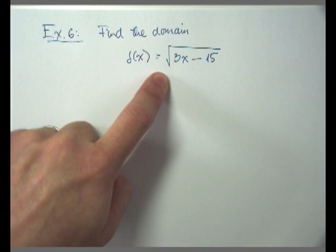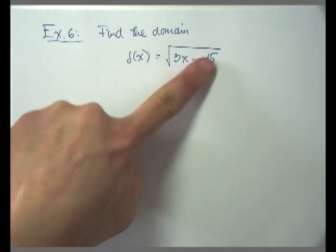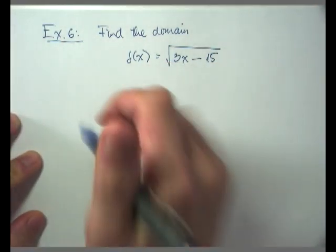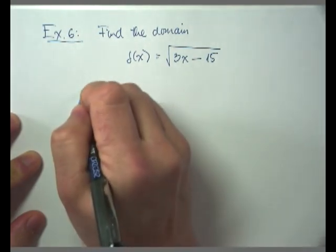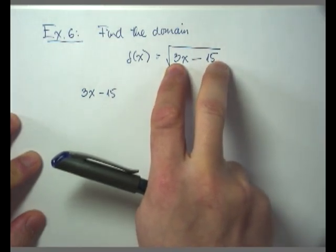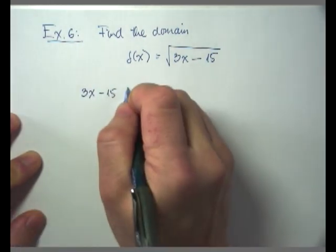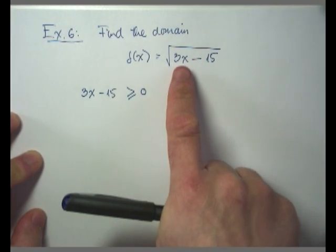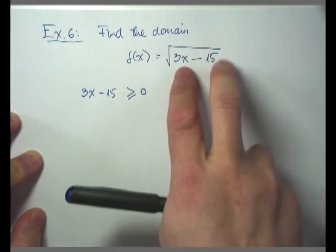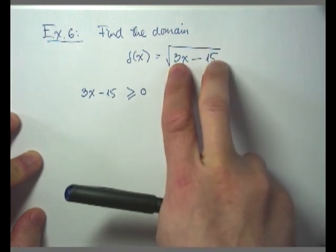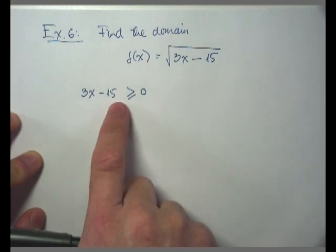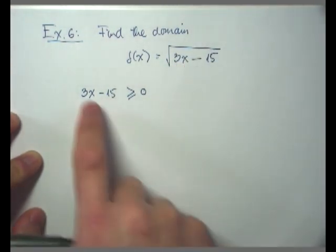Looking at the basic hints, remember any quantity underneath the square root cannot be negative. So the safe zone for this function is to set 3x minus 15 — the entire quantity underneath the square root — greater than or equal to zero. The basic hint says any quantity underneath the square root cannot be negative, meaning it must be greater than or equal to zero. I'm going to solve for all x values that cause this quantity to be greater than or equal to zero.